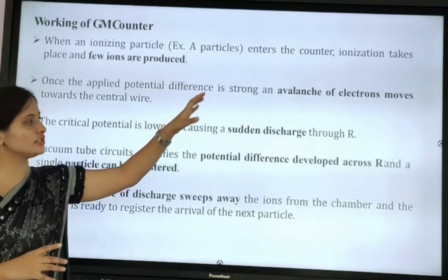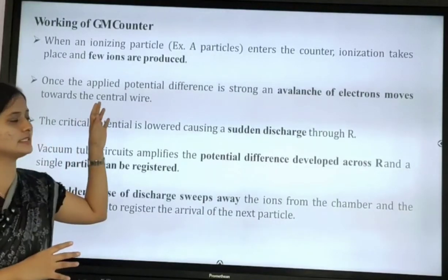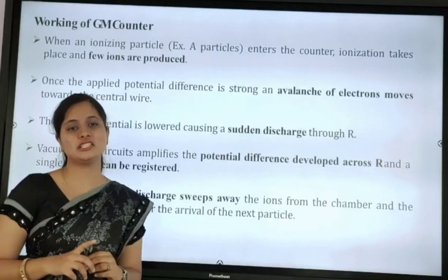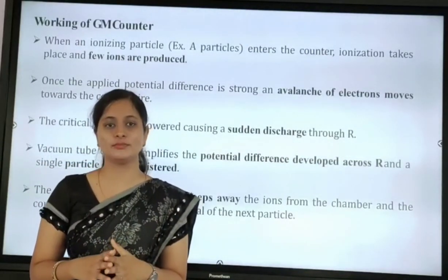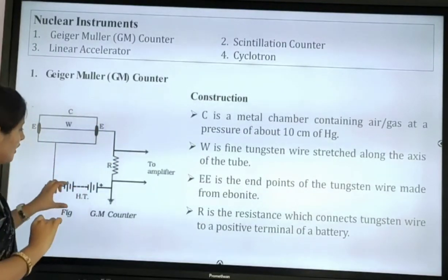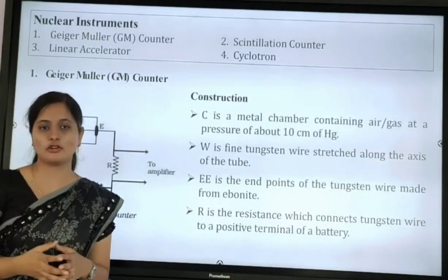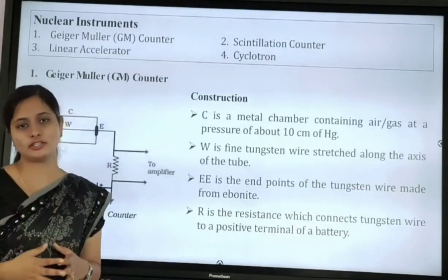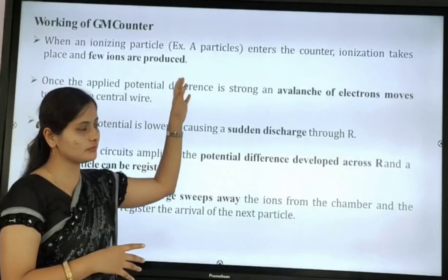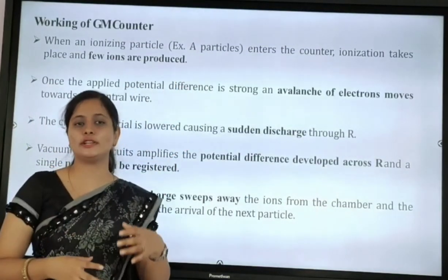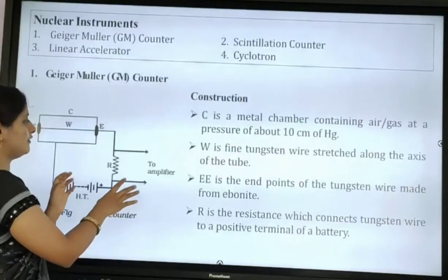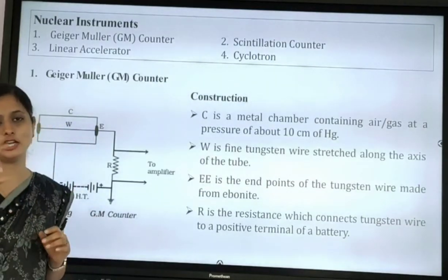Second, once the applied potential difference is strong, an avalanche of electrons moves towards the center wire W. Avalanche means a sudden increase of voltage or current. When we apply a strong voltage to the chamber containing ions, this avalanche of electrons moves toward the center wire.